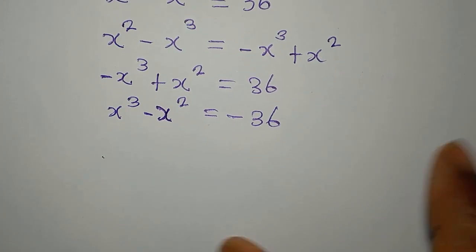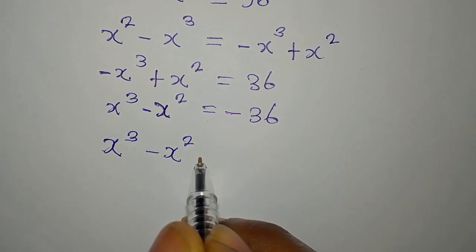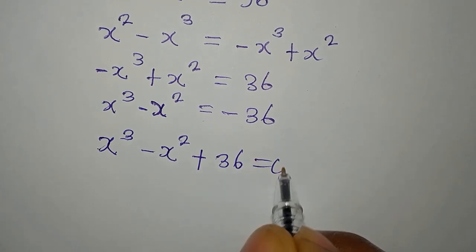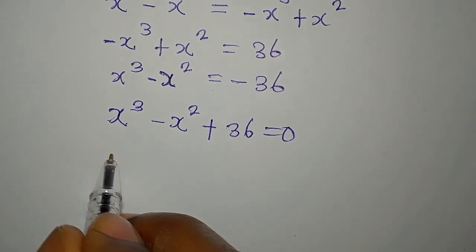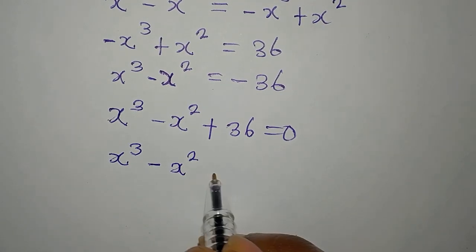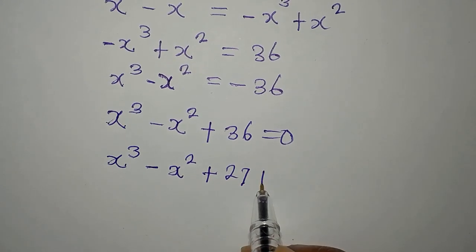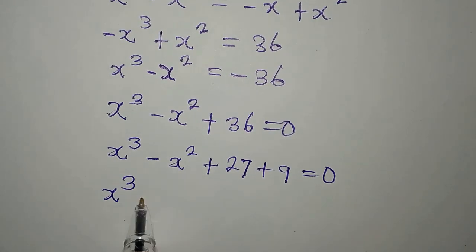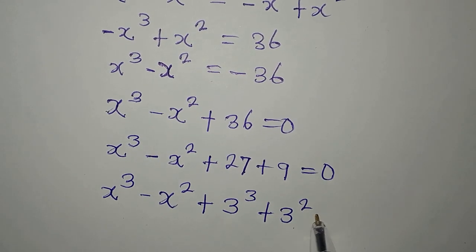Now I want to bring this to the left, so it becomes x to the power of 3 minus x to the power of 2 plus 36 equals 0. From here, I can express this in a new form. We have x to the power of 3 minus x to the power of 2, and 36 here is the same thing as 27 plus 9. So we equate this to 0: x to the power of 3 minus x to the power of 2 plus 3 to the power of 3 plus 3 to the power of 2 equals 0.